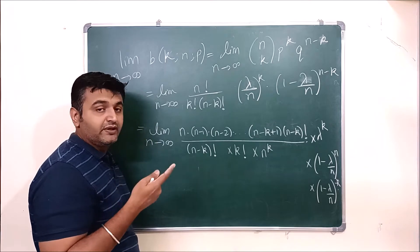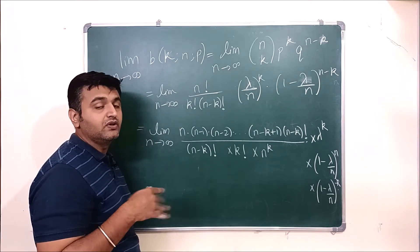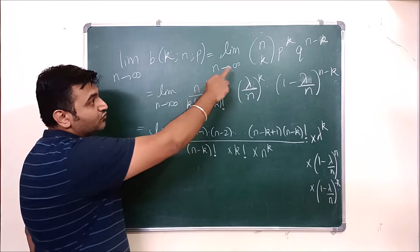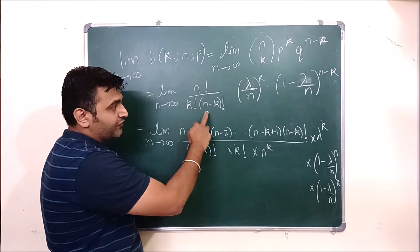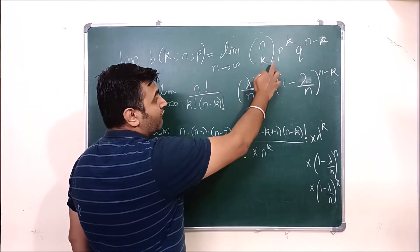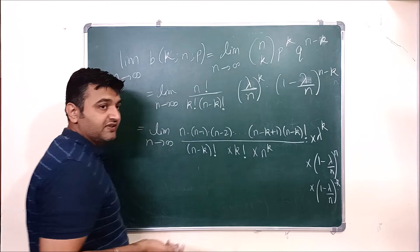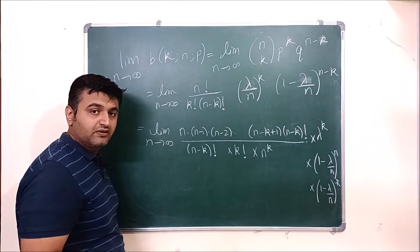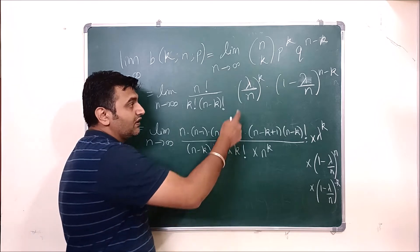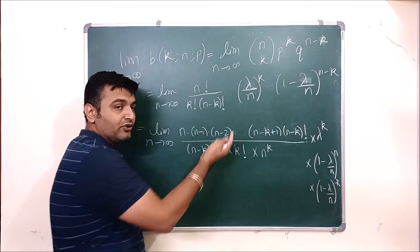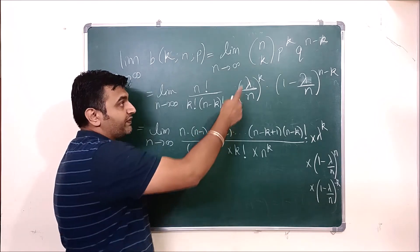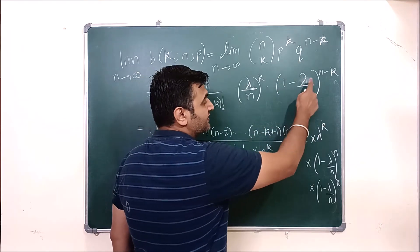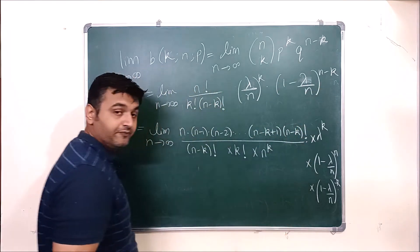What is p? It is the probability of success. What is q? It is 1 minus p. Now if lambda is the total number of successes and n is the number of trials, then the probability of success p equals lambda over n. So p raised to k is lambda over n raised to k, and q raised to n minus k is 1 minus lambda over n, raised to n minus k.